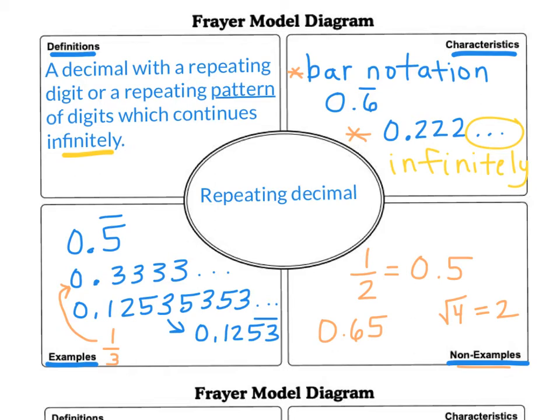So look at your Frayer model and make sure you've filled in all four sections for repeating decimals. And then we'll move on to terminating decimals.